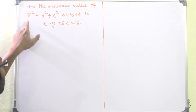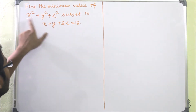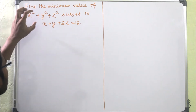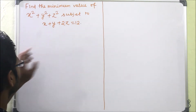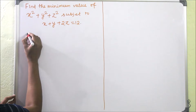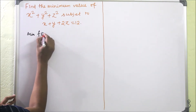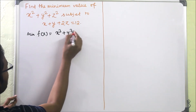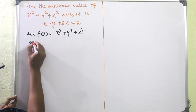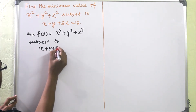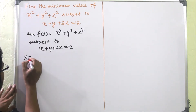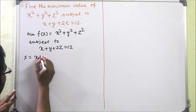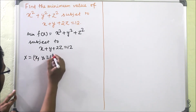The problem says that we have to find the minimum value of x² + y² + z². This will represent some spherical type of graph. We have to find the minimum of this function using the given constraint, where x is a three-component vector: x, y, z.